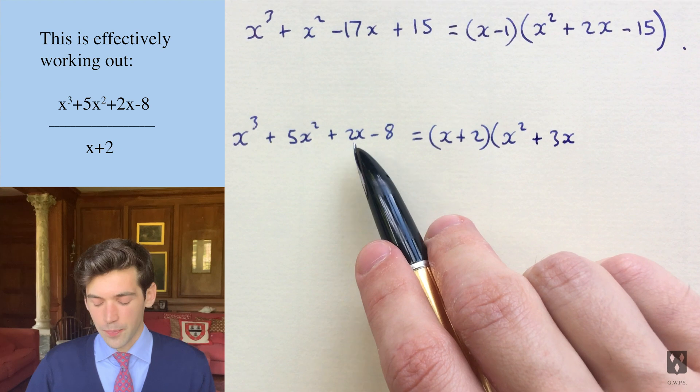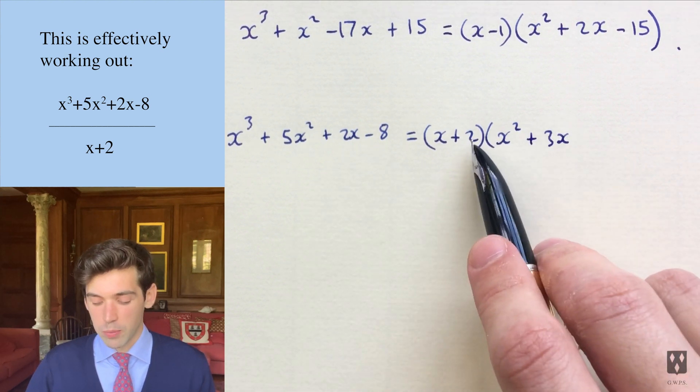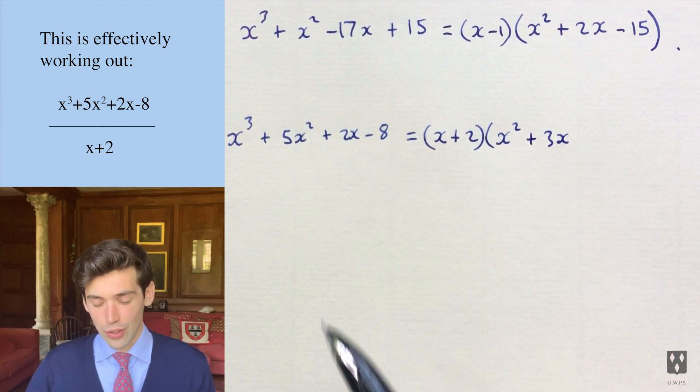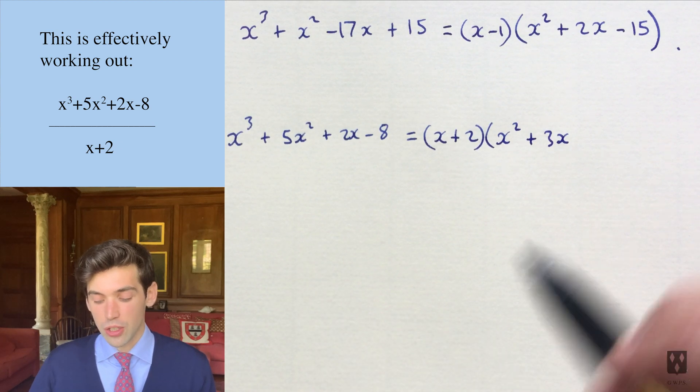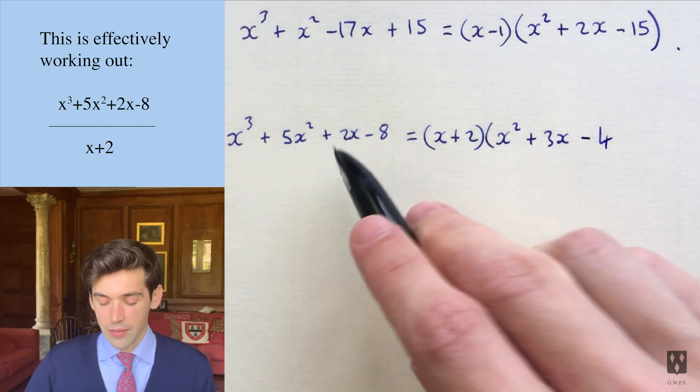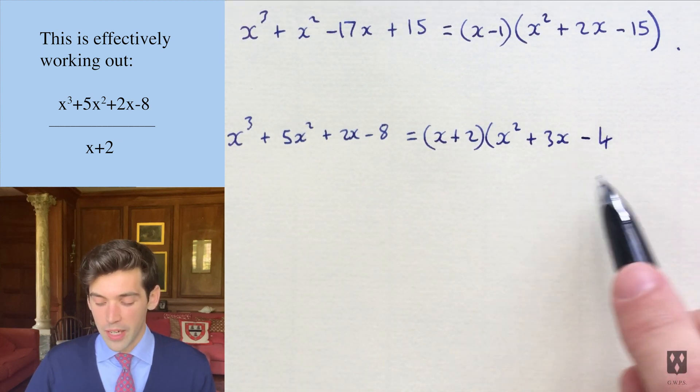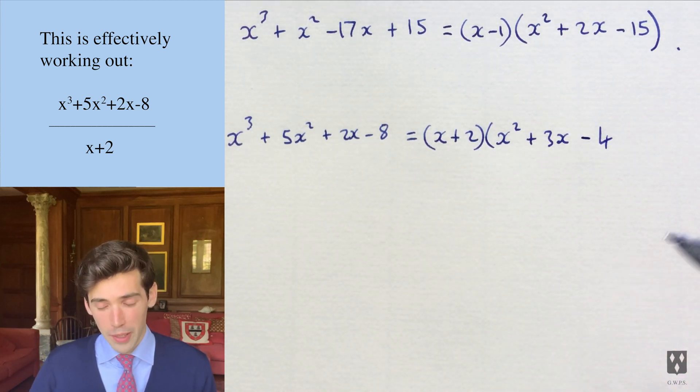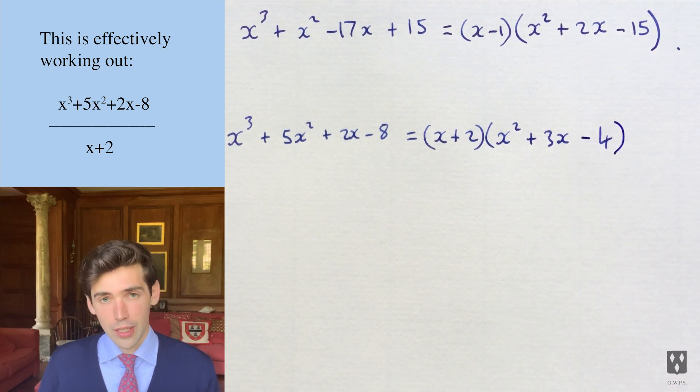Now we want plus 2x here. And then we need to remember that 3x multiplies by the 2 to give 6x. Now we want only plus 2x. We need to subtract 4 because that then gives us this 2x. And then the minus 4 times 2 gives you minus 8. And so that's the answer.